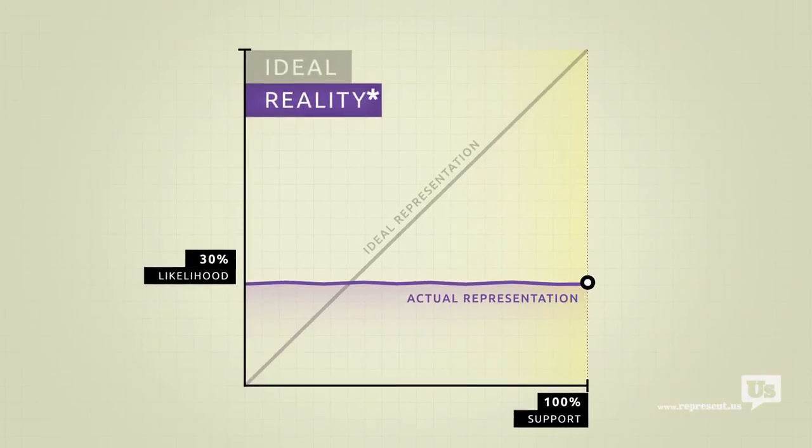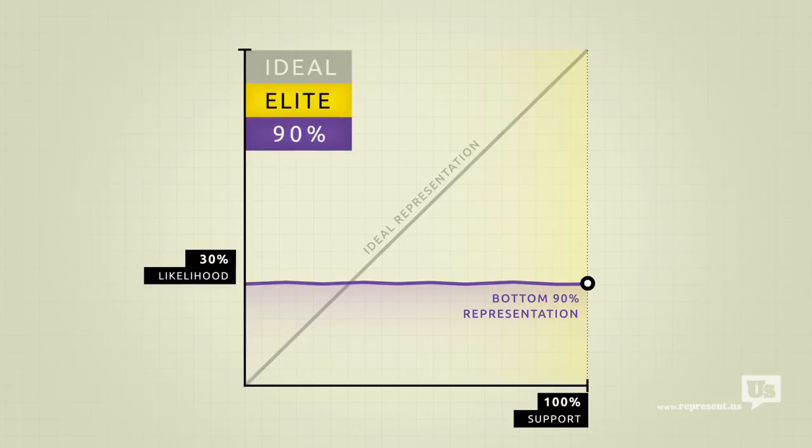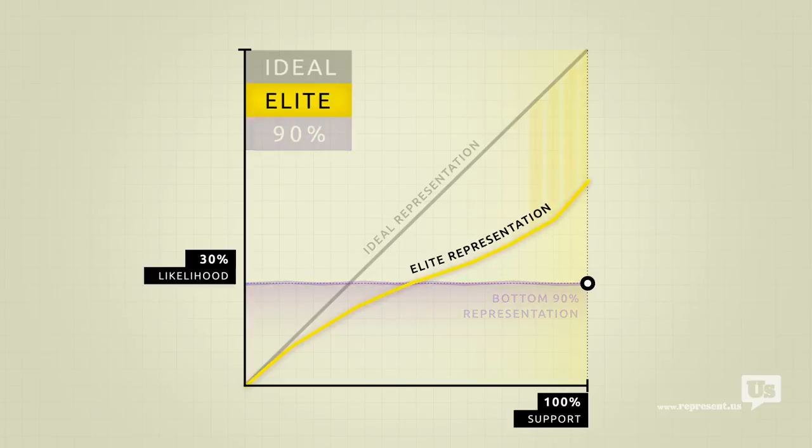But there's a catch. This flat line only accounts for the bottom 90% of income earners in America. Economic elites, business interests, people who can afford lobbyists, they get their own line. Look at how much closer their line is to the ideal.